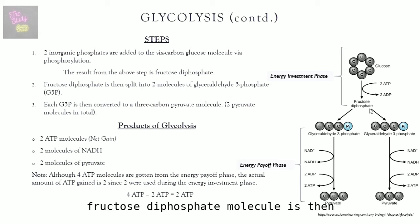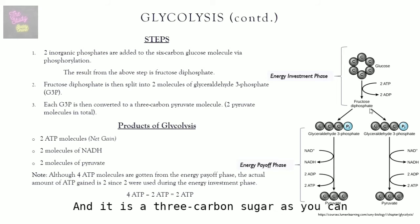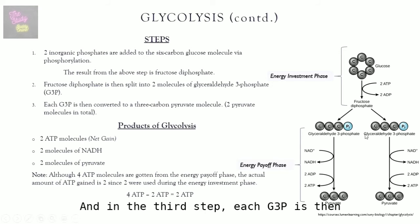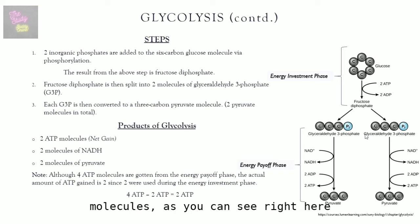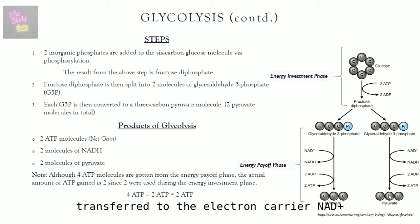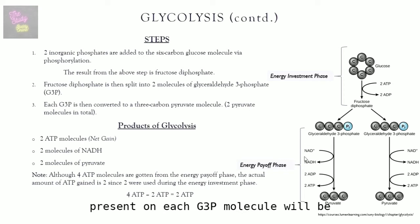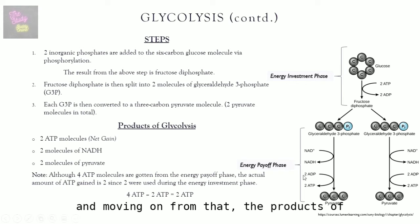After the first step, the six-carbon fructose diphosphate is split into two molecules of glyceraldehyde-3-phosphate, or G3P, which is a three-carbon sugar. In the next step, each G3P is converted to a three-carbon pyruvate molecule, giving two pyruvate molecules total. The electrons from G3P are transferred to the electron carrier NAD+, which is reduced to NADH. The inorganic phosphate in each G3P is combined with ADP to form ATP.